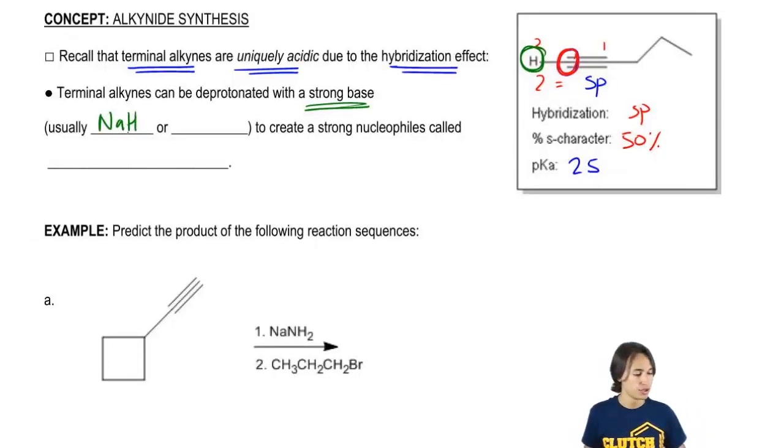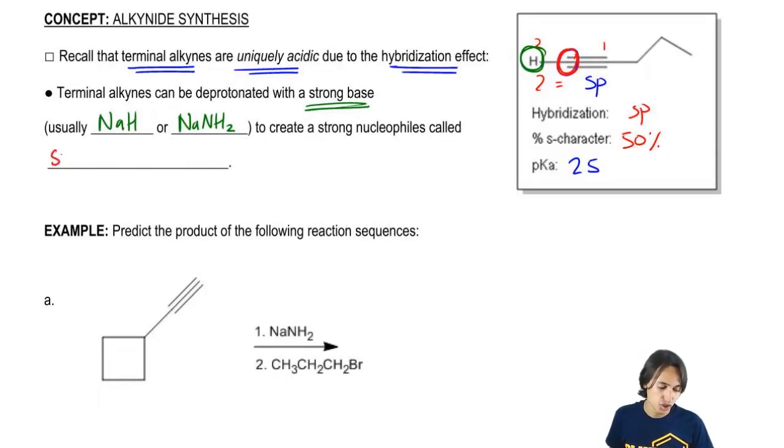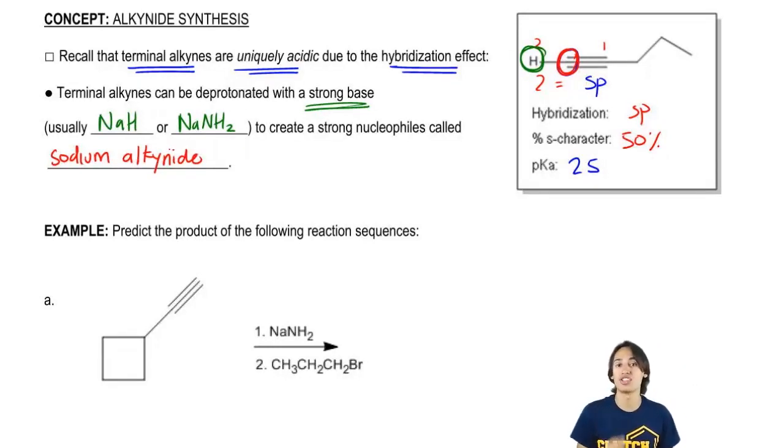And usually the bases that we use are either NaH, sodium hydride, or NaNH2, sodium amide. And both of these are very strong, small bases that are going to be able to pull that hydrogen off of the terminal alkyne. So I'm talking about that green hydrogen above me. So that's going to create a strong nucleophile that we're going to call a sodium alkynide.